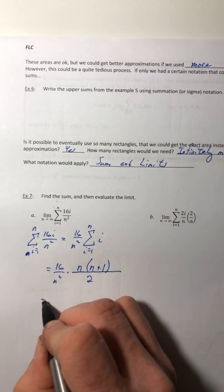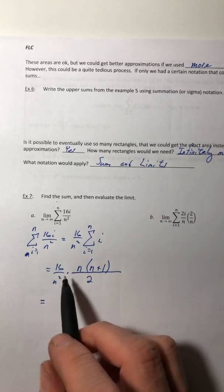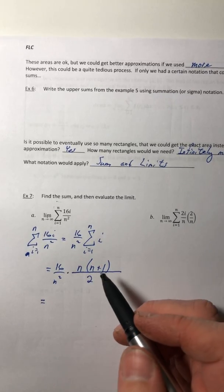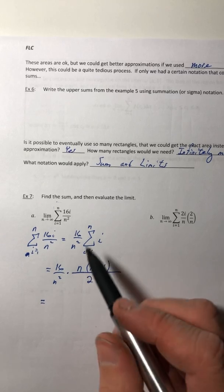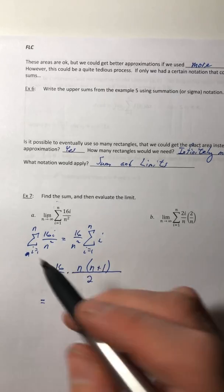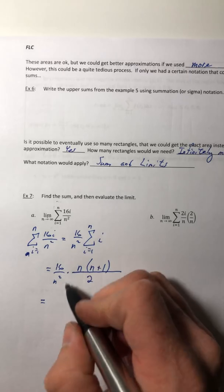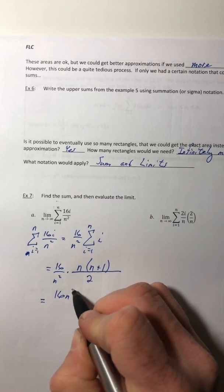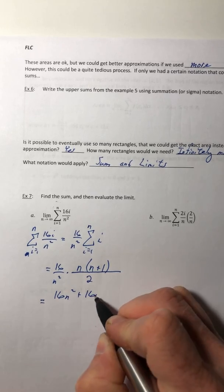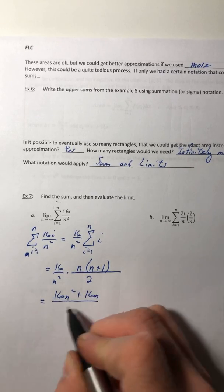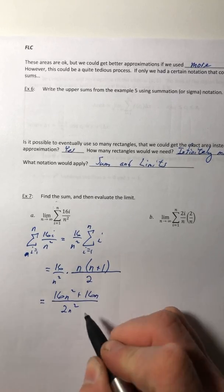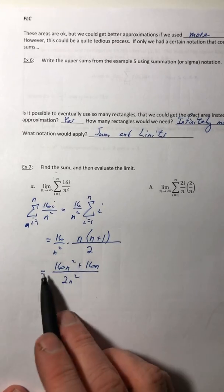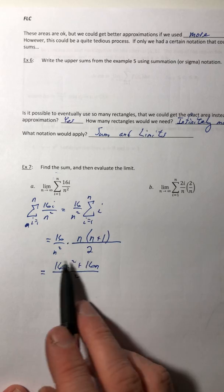I'm going to simplify this, or expand this out, just going to multiply everything out. You don't need to reduce it if you don't want to. I usually just kind of multiply it out, so 16n squared plus 16n all over 2n squared.